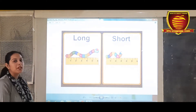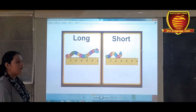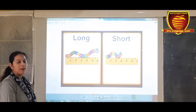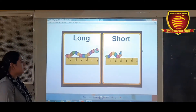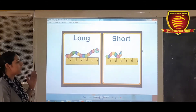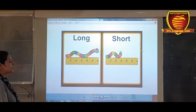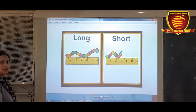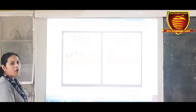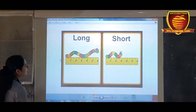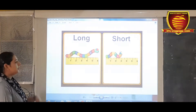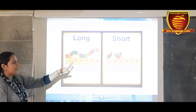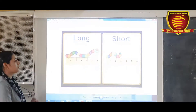I have some pictures for you for identifying long and short objects. In the first picture, you can see one is a long caterpillar and one is a short caterpillar. This one is long and this one is short.